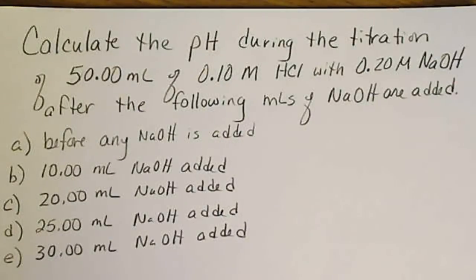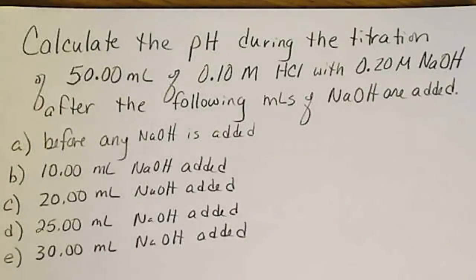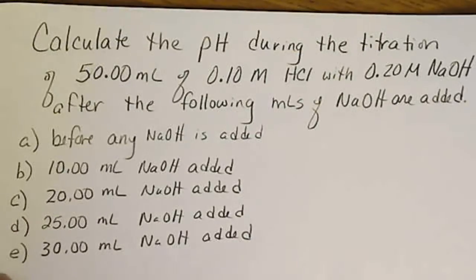We're going to calculate the pH of a solution of a strong acid as we're titrating it with the strong base sodium hydroxide. We'll see that the pH is going to increase up to the end point where we have a pH of 7, and then continue to increase as we have excess sodium hydroxide. So we'll do this for at least five different calculations.